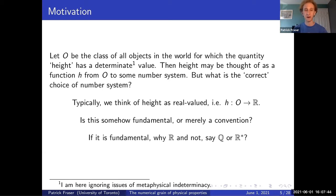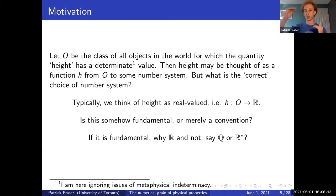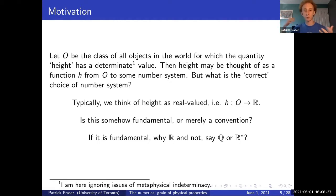Suppose we've got objects in the world that have these quantities, and those quantities take on values. Height, for instance, may be thought of as a function h that takes in objects and outputs values in some number system. The question I want to get at is: what's the correct choice of number system for quantities? In the example of height, we typically think of it as real-valued. Classically, the received view is that all of those uncountably infinite digits required to fully encode a real number somehow track some feature of reality.